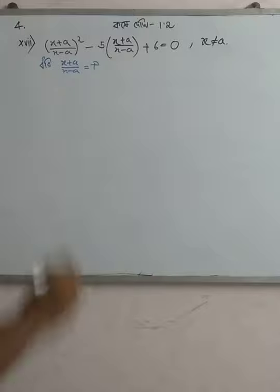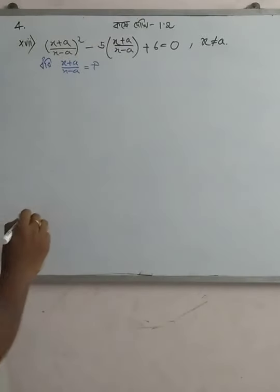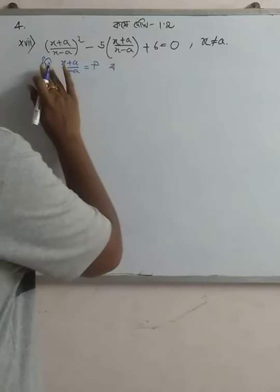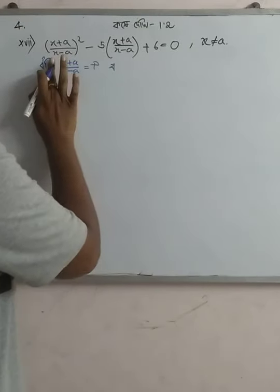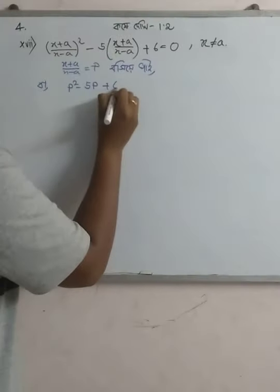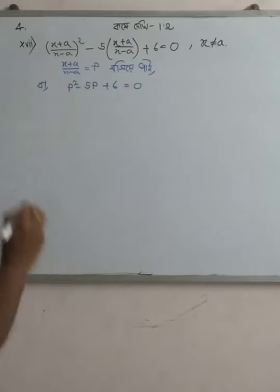Let t equal x plus a by x minus a. Then we have x plus a by x minus a is equal to t whole squared.